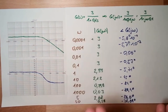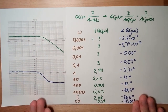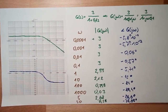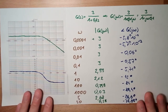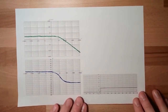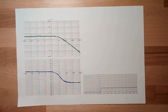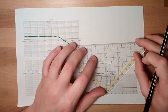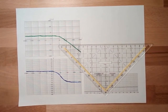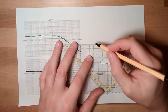This is the Bode plot calculation. However, we cannot only show this in the Bode plot — we can also make a so-called Nyquist plot. Or in German, Ortskurve. I will simply draw here something like this, because this is absolute value and angle, and I can simply use this in a diagram.